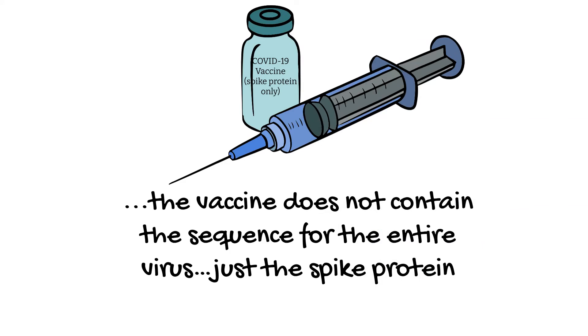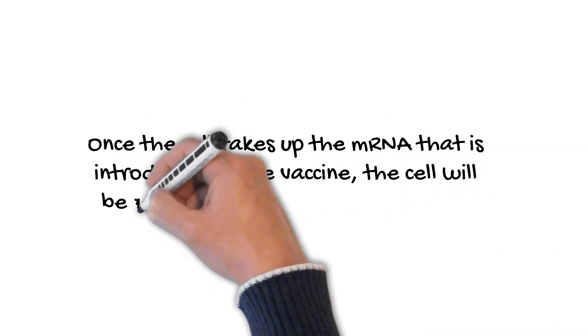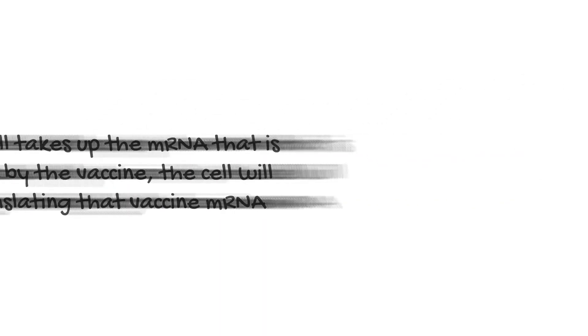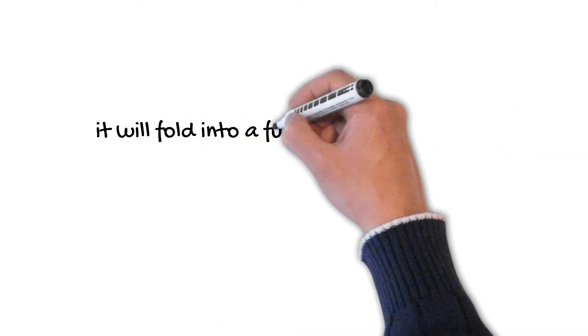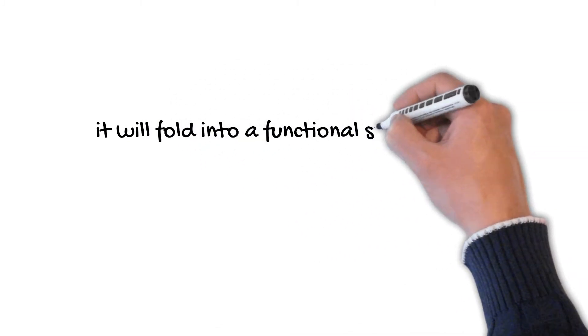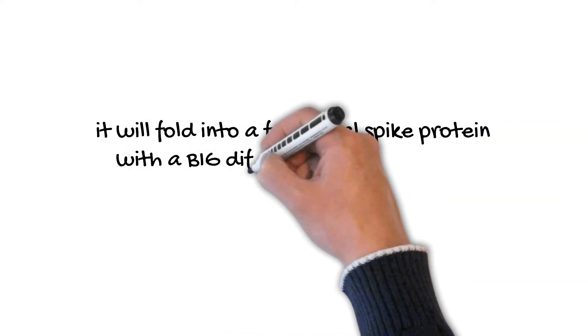So, why would researchers do that? Once the cell takes up the mRNA that's introduced by the vaccine, the cell will begin translating that vaccine mRNA into that specific string of amino acids we've been talking about. That string of amino acids will be a polypeptide that looks just like the spike protein that the virus makes using our machinery.